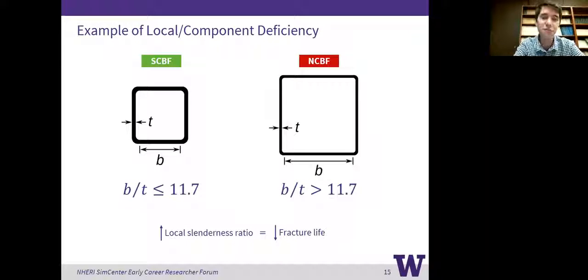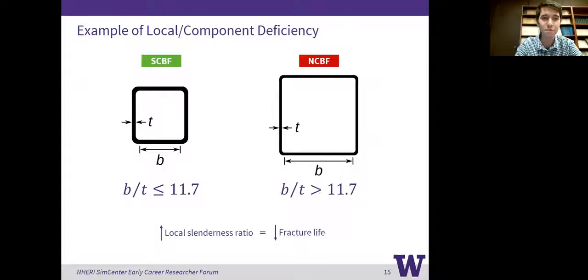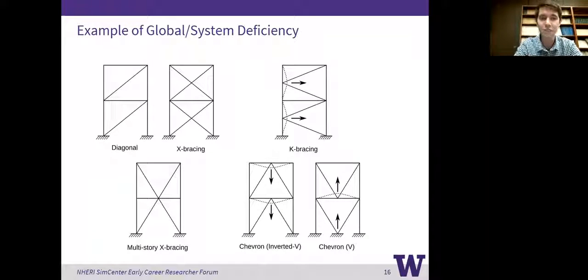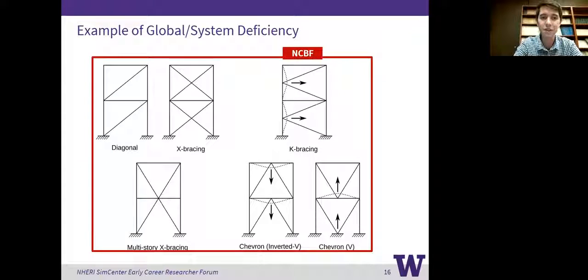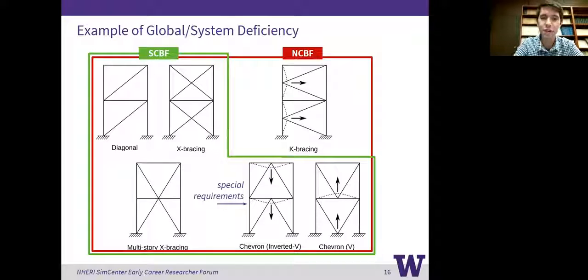Some of these are going to be local or component deficiencies, like the width-to-thickness or local slenderness ratio of the brace. As we increase the local slenderness ratio, we're really decreasing the fracture life of the brace after it buckles, because we're intensifying that local cupping deformation at mid-span with a square HSS brace. Other problems are more systematic in nature — all of the frames considered would have been compliant for an NCBF. We removed K-bracing for SCBFs and have pretty severe requirements for Chevron brace frames in SCBFs, but in the past there were no such restrictions, so their performance and appearance are very different.